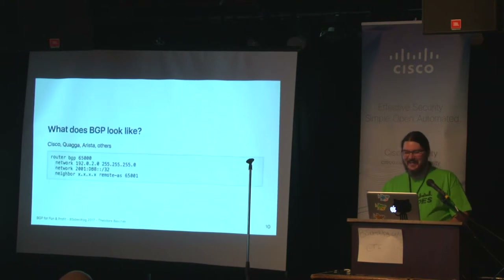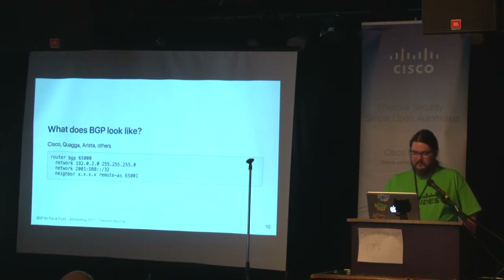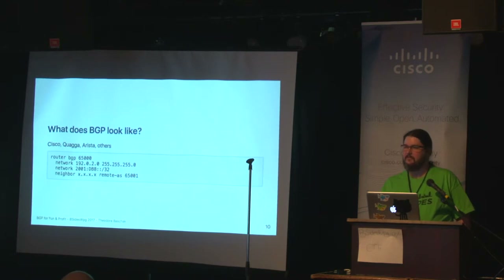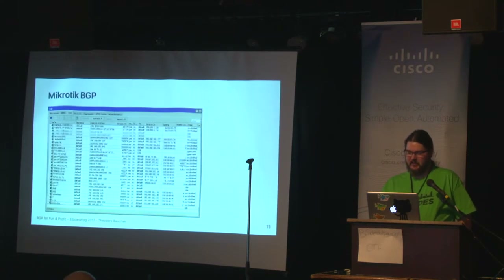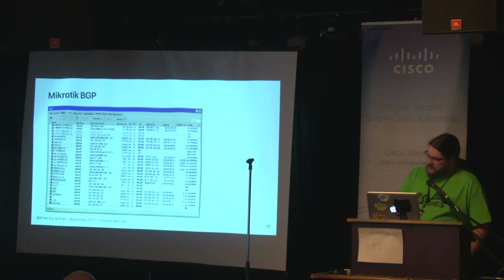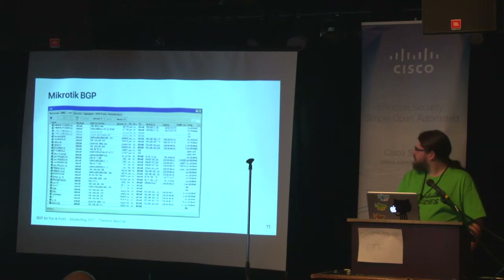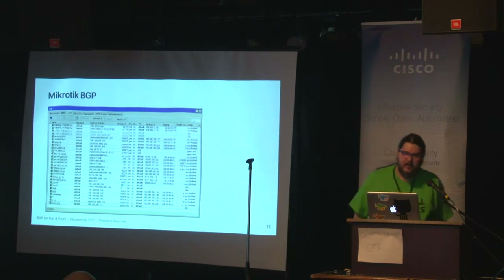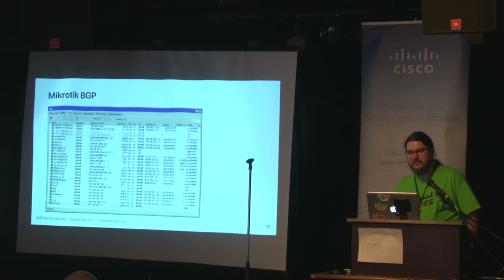So what does BGP look like? If you've ever interacted with a Cisco router, it looks like that. There are other platforms with a syntax that looks pretty much identical to Cisco because most people are familiar with it — Quagga is one, Arista is another. On MikroTik, there's a nice little Windows application which you can run through Wine, and you can set up all your peers in the interface. These are all the peers that I have — I took the screenshot this morning. I have 25 peers and about 20 of them active right now.